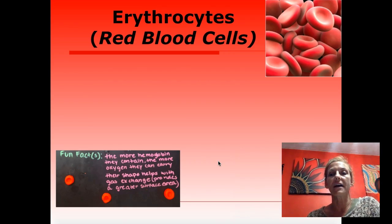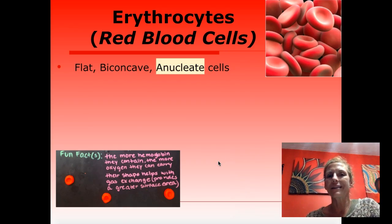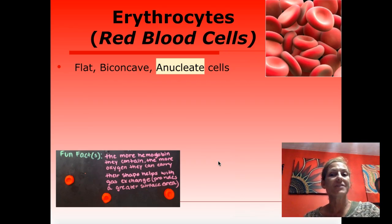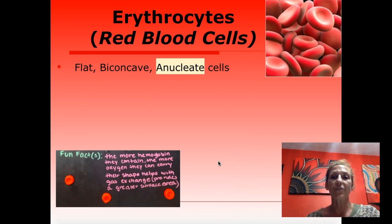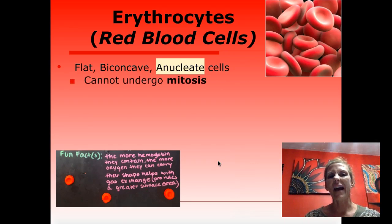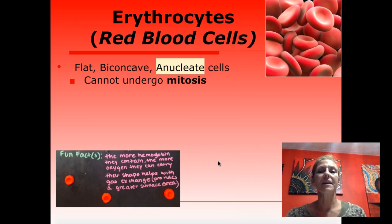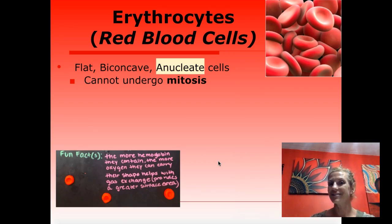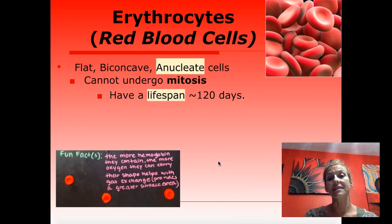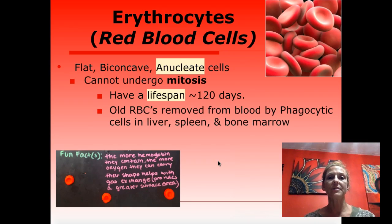Starting with red blood cells: erythrocytes are unique with structural features unlike any other cell. They are the only anucleate cells — meaning they don't have a nucleus. They are biconcave, like a lifesaver, indented on both sides. They are essentially bags of hemoglobin. Because they don't have a nucleus, they can't undergo mitosis, so they won't make more red blood cells on their own. They only live about 120 days, then are decomposed by phagocytic cells in the liver, spleen, and bone marrow, with iron and hemoglobin extracted.